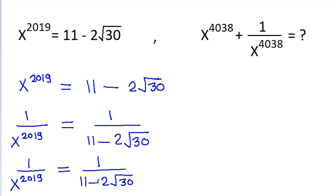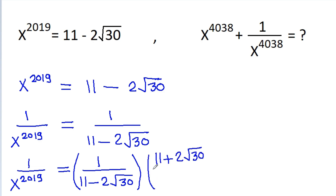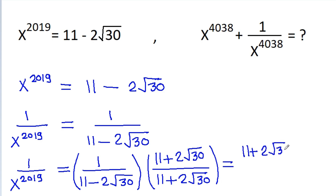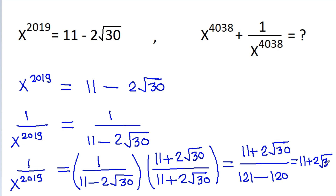If we rationalize it, then we need to multiply it with 11 plus 2 root 30 by 11 plus 2 root 30. And it will be 11 plus 2 root 30 by 11 squared is 121 minus 2 root 30 squared is 120. So the result is 11 plus 2 root 30.